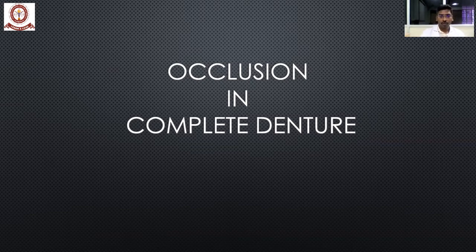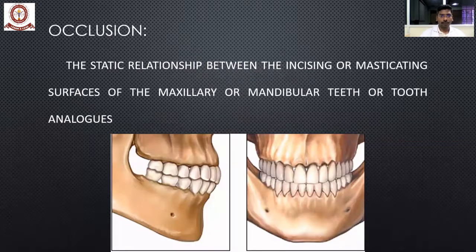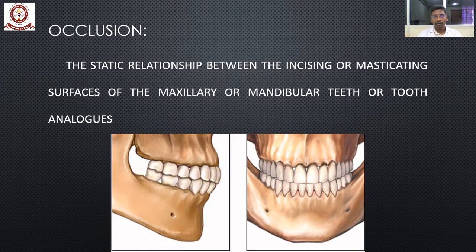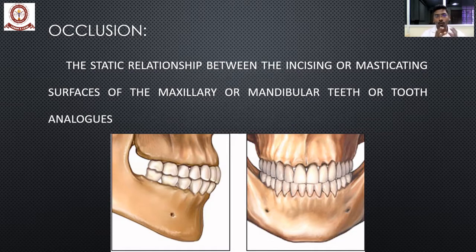So first, what is occlusion? As per the GPT — Glossary of Prosthodontic Terms — occlusion is nothing but a static relationship between the incising and masticating surfaces of the maxillary or mandibular teeth or tooth analogs. You have to memorize this definition because it is most commonly asked. It is basically the relationship between maxilla and mandible when you clench the teeth — that is called occlusion, and it is a static position.